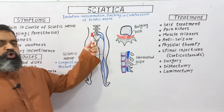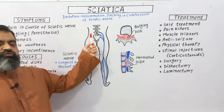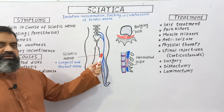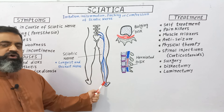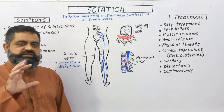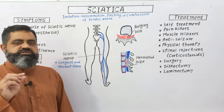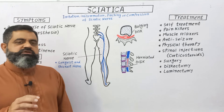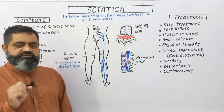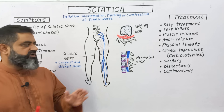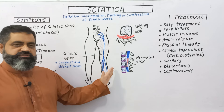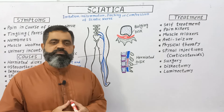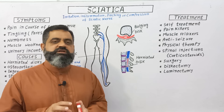First of all, we are going to look at what the sciatic nerve is. The sciatic nerve arises from the lower back of the body and runs through the buttocks into the leg, knee, and lower leg. It is the longest and thickest nerve in our body, approximately 2 centimeters wide. The sciatic nerve is basically a collection of different nerves and is very important for the reflex action of our leg muscles.